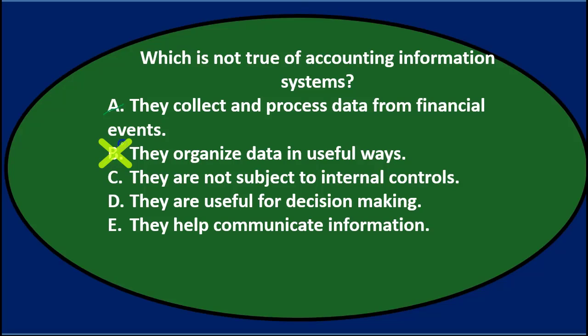B: They organize data in useful ways. Accounting information systems hopefully do organize data in a useful way, so I think that's true. C: They are not subject to internal controls. The accounting information system not being subject to internal controls doesn't sound quite right to me, so I'll keep that one.